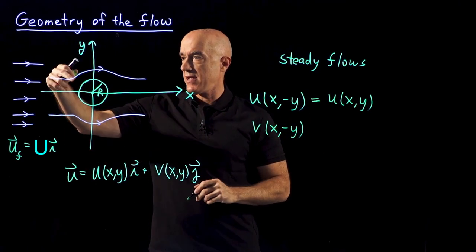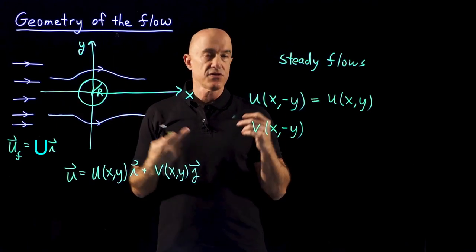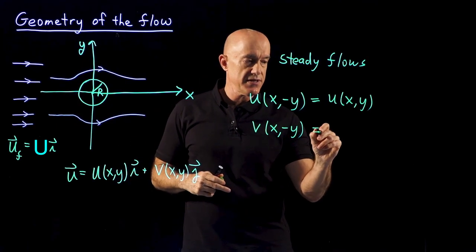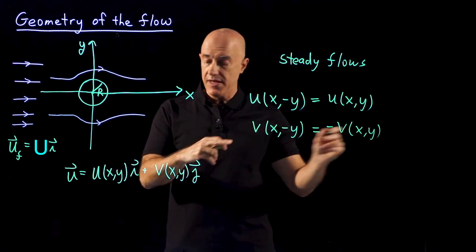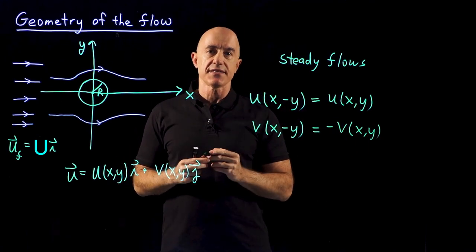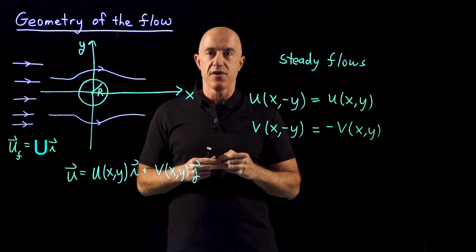here it's going down and up, here it's going up and down, so it changes sign. So this is equal to negative v of x and y. So the y component of the velocity is an odd function of y.